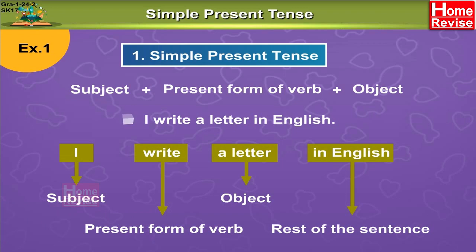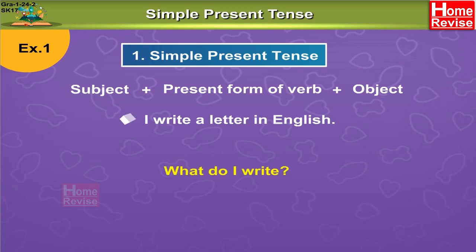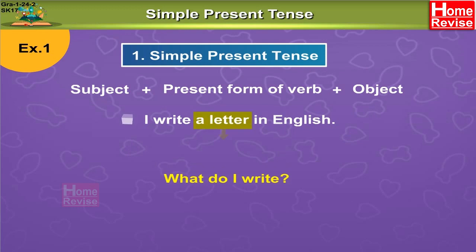Now how to identify the object? It is very simple. If you ask a question beginning with 'what,' then whatever answer you get is the object. So in the above sentence, if you ask: what do I write? The answer you get is 'a letter.' So a letter is the object.